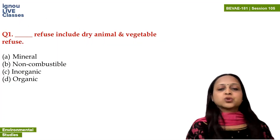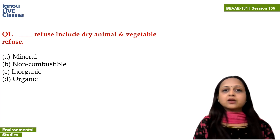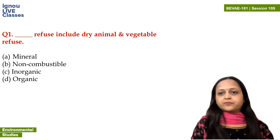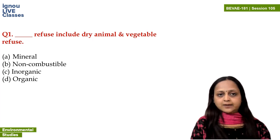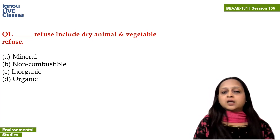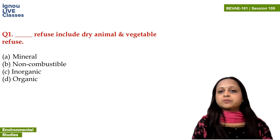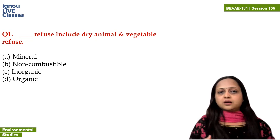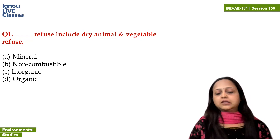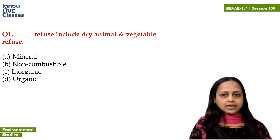Let's start with the first question of session 105: Black refuse includes dry animal and vegetable waste or vegetable refuse. You have to tell which refuse is the waste — the material which is not of our use. Which refuse includes dry animal and vegetable refuse? What do we call that waste — mineral, non-combustible, inorganic, or organic?